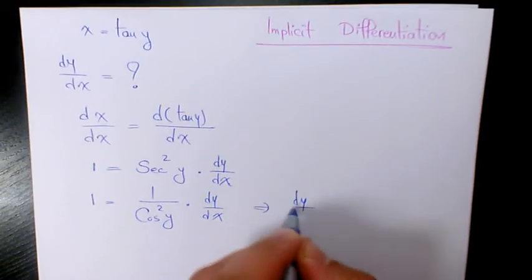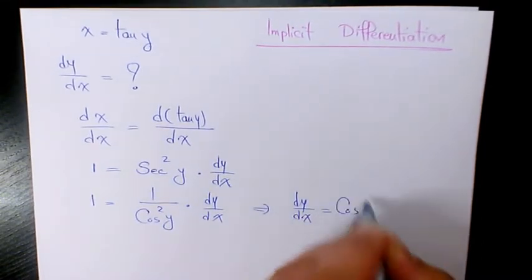Then we can say dy over dx is going to be cosine squared y.